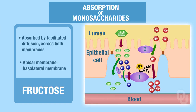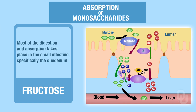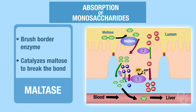How do the brush border enzymes play a role? Here we have a brush border enzyme called maltase in the lumen of the small intestine. Remember that most of your digestion and absorption takes place in the small intestine, specifically the duodenum. Maltase is the brush border enzyme that takes maltose and catalyzes the reaction to break the bond between those two glucose units into the monosaccharide glucose. Then we can absorb glucose just as described. The only extra step is that you have a brush border enzyme called maltase to help break down that disaccharide.